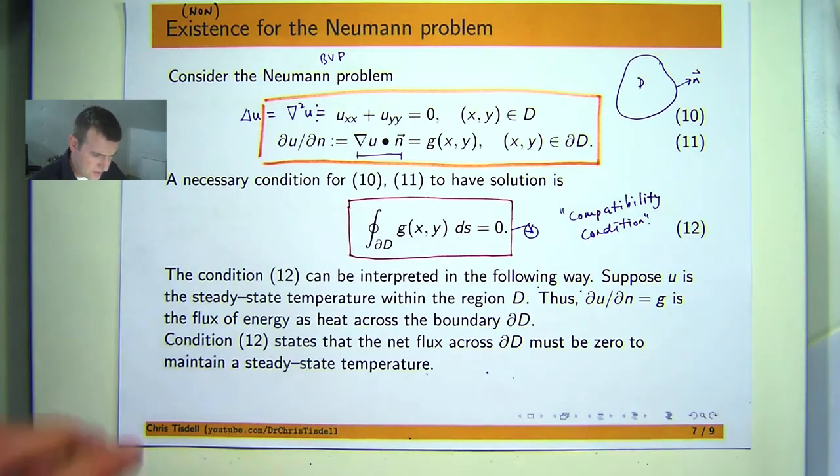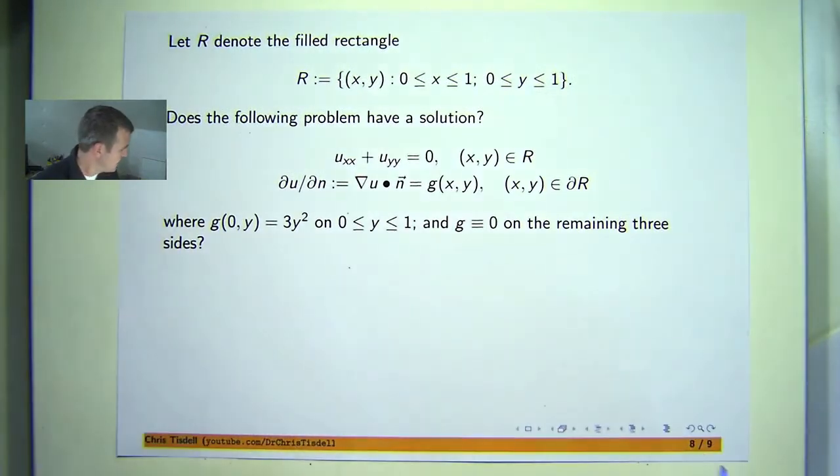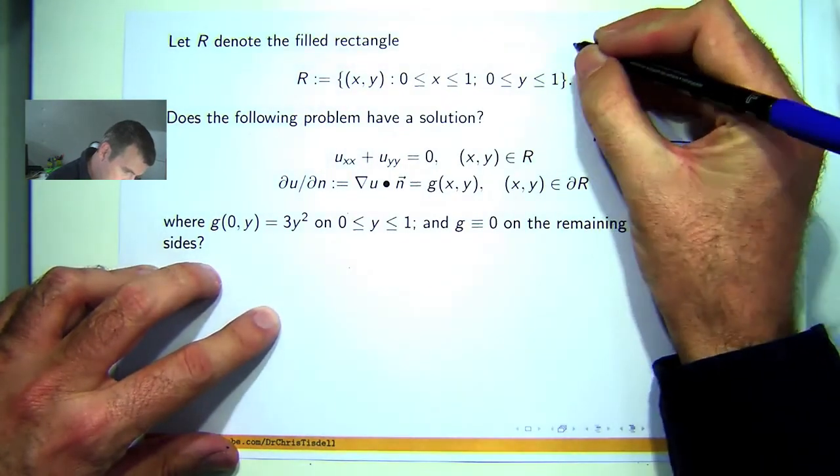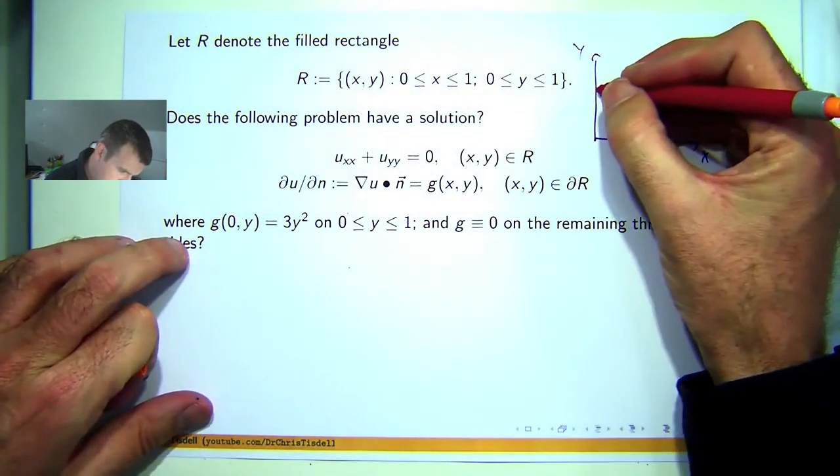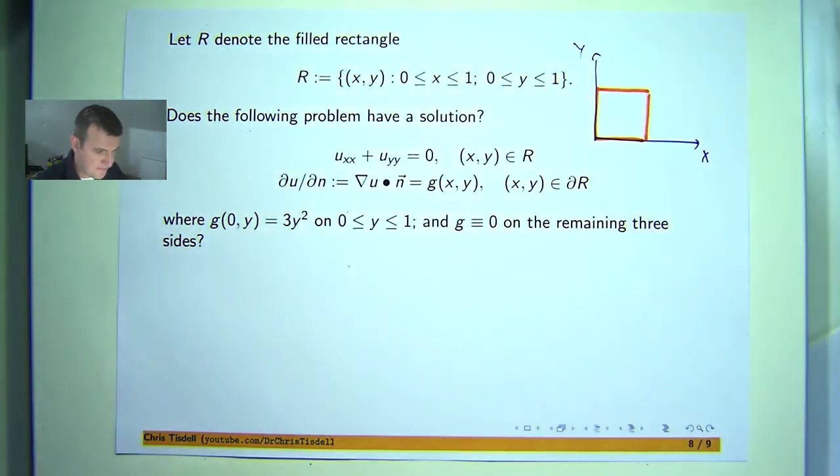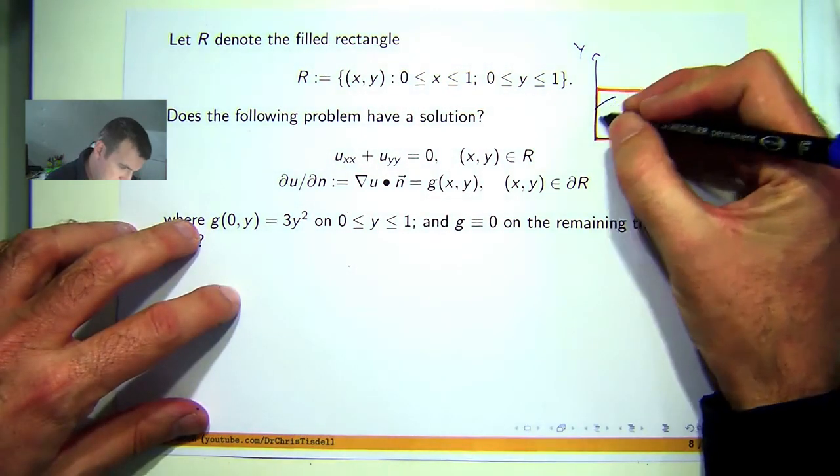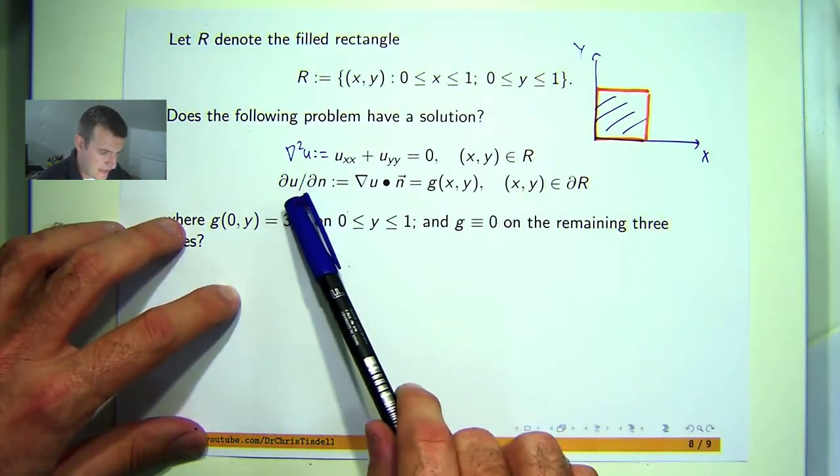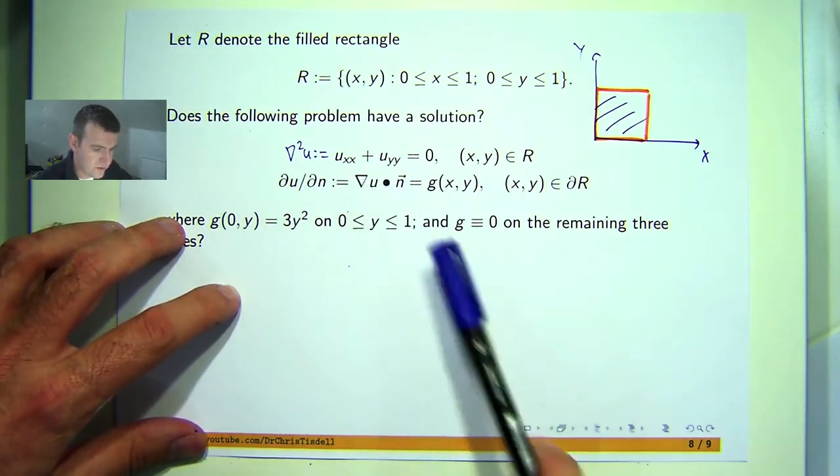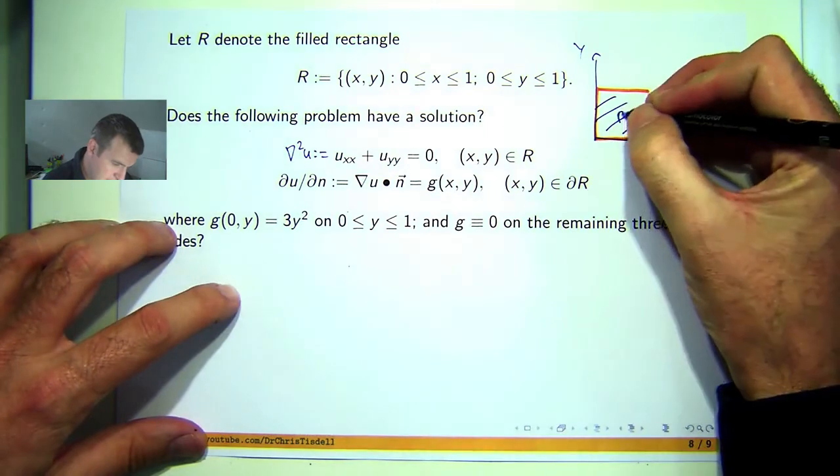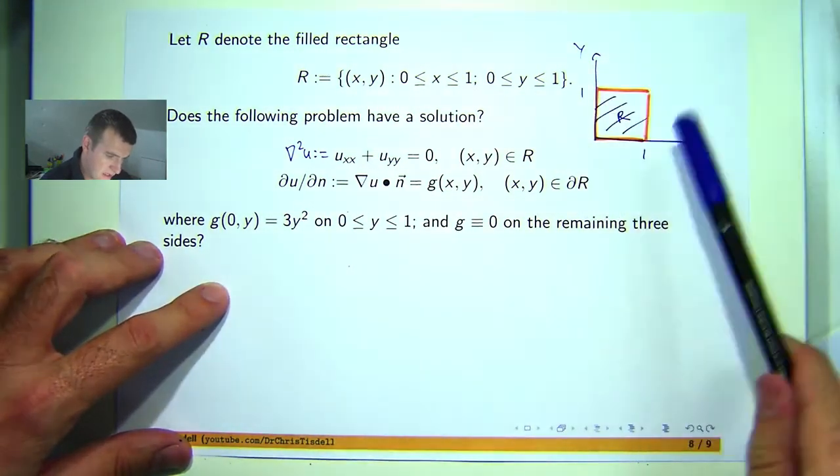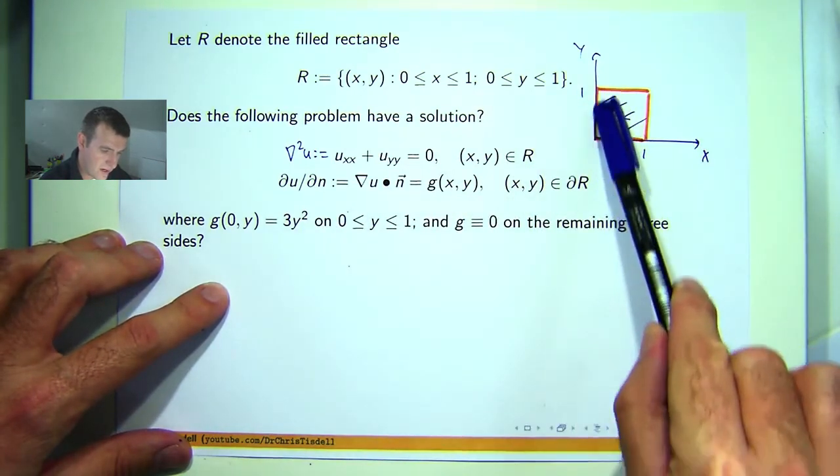So let me give you an example of how to apply this result. Here I've got a rectangle, or actually I guess it's a square here. We're just working in the xy plane here. I've got Laplace's equation satisfied in the rectangle and I've got this exterior or normal derivative on the boundary. The given function g is zero along this edge, zero along this edge, zero on this edge, and it's 3y squared along this edge.